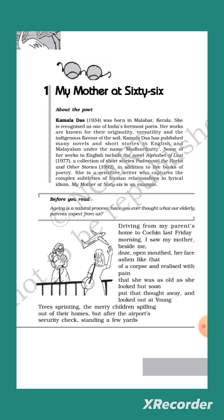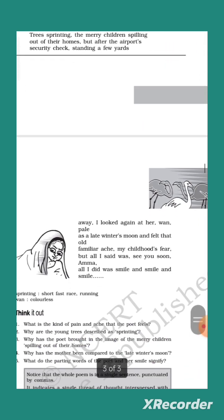The next lines are: 'But after the airport's security check, standing a few yards away, I looked again at her, worn pale as a late winter's moon.' After reaching the airport and passing through security, the poet again looked at her mother standing a few yards away. Her mother looked lifeless and faded like a late winter's moon, which cannot be seen clearly because of mist and fog.